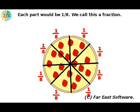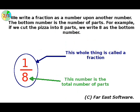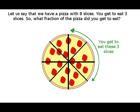We write a fraction as a number upon another number. The number at the bottom is the number of parts of the whole that we make.